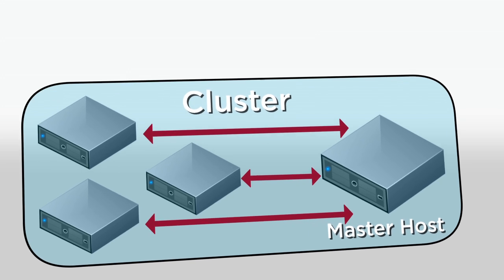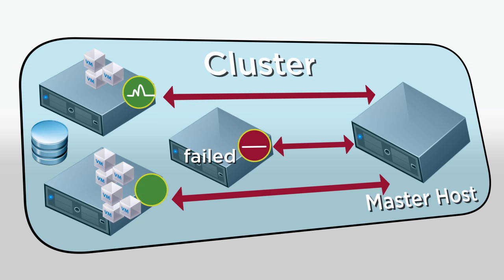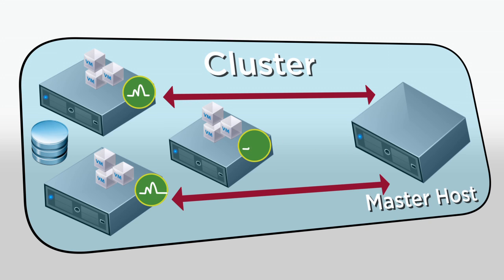The master host can detect host failures or isolation by monitoring for network heartbeats from each host every second. If it does not get a heartbeat, it determines if the host is heartbeating to one of the cluster's datastores. If not, the host is considered to have failed and HA restarts its virtual machines on alternate hosts. But if the host is still heartbeating with a datastore, it might only be network isolated — meaning it is still running but cannot observe the vSphere HA management network. In this case, the master host continues to monitor the virtual machines and, if they power off, restarts them on another host.